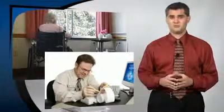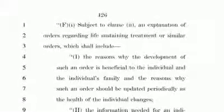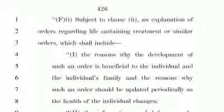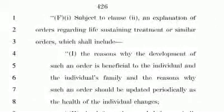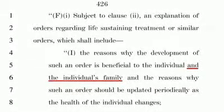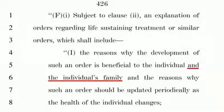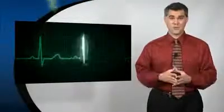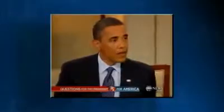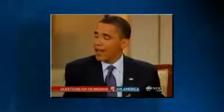But don't take my word for it — look at the bill. Page 426 says: "An explanation of orders regarding life-sustaining treatment or similar orders shall include reasons why the development of orders is beneficial to the individual and the individual's family, and the reasons why such orders should be updated periodically as the health of the individual changes." Think about this: as your health changes, you need to update your orders in a way that is beneficial to you and your family. That can only mean money. If your treatments are costing too much for your family, how did Obama put it? "Maybe you're better off not having the surgery, but taking the painkiller."